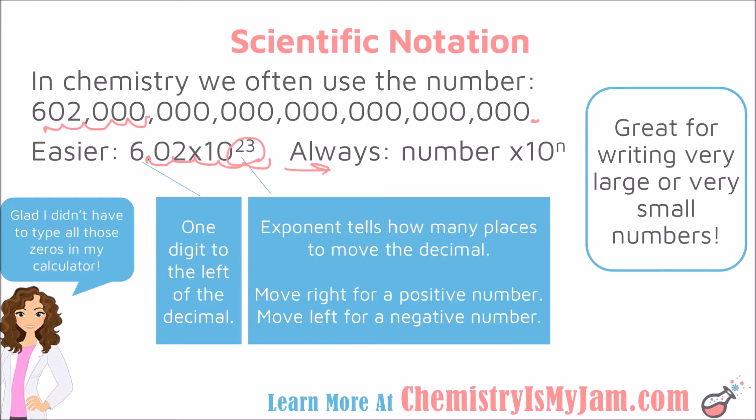If my exponent had been negative, I would have taken my decimal and moved it 23 places to the left. But in this case we had a positive exponent, so we moved it to the right and got a very large number.